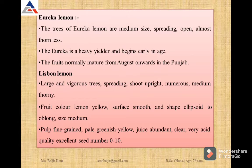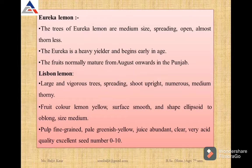The main five groups of citrus are: Sweet Orange, Mandarin, Grapefruit, Lime, and Lemon, plus Pomelo. We have already discussed the different varieties that come under all these groups of citrus.